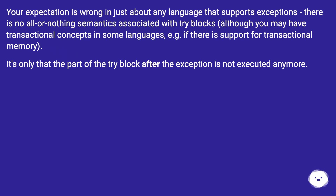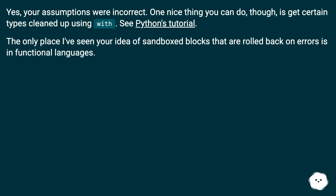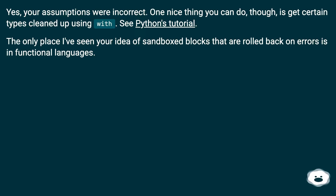It's only that the part of the try block after the exception is not executed anymore. Your assumptions were incorrect. One nice thing you can do, though, is get certain types cleaned up using context managers — see Python's tutorial. The only place where sandbox blocks that are rolled back on errors exist is in functional languages.